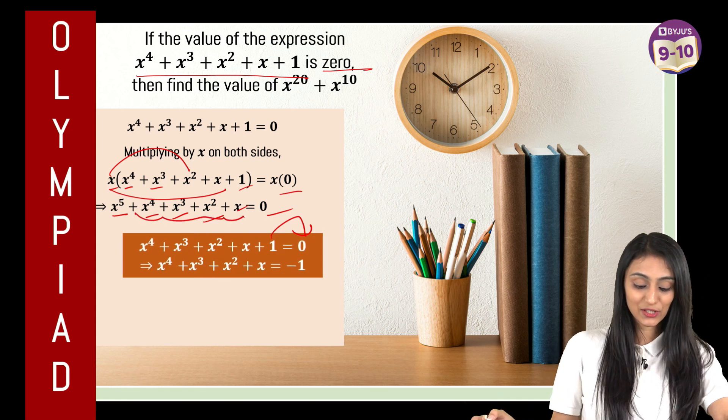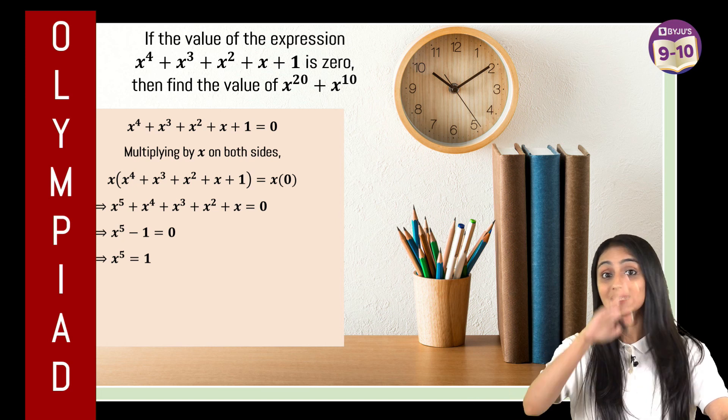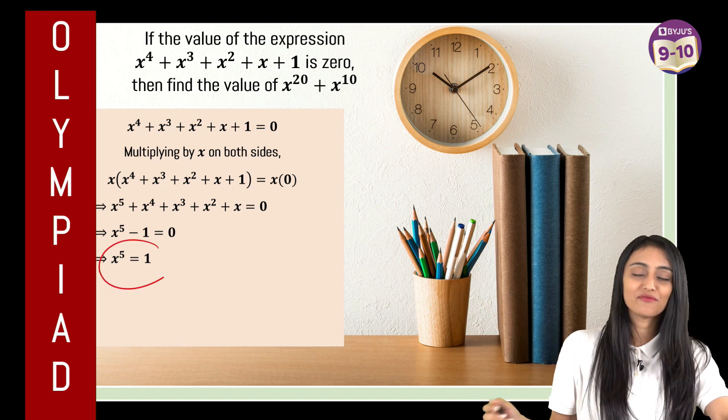So I'm going to substitute this here. So this is going to be x to the power 5 minus 1 equal to 0. If I take 1 to the other side, I have x to the power 5 equals to 1.